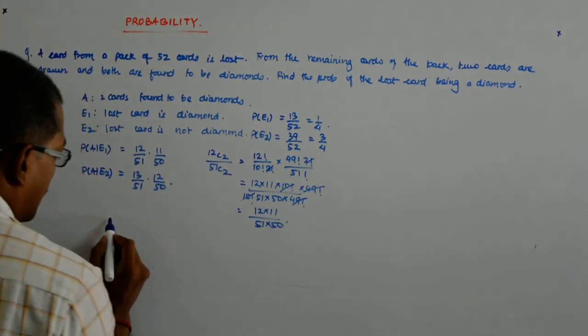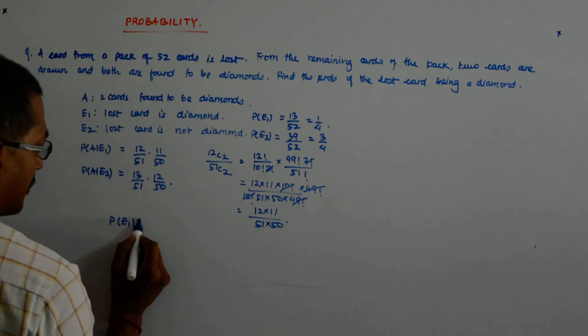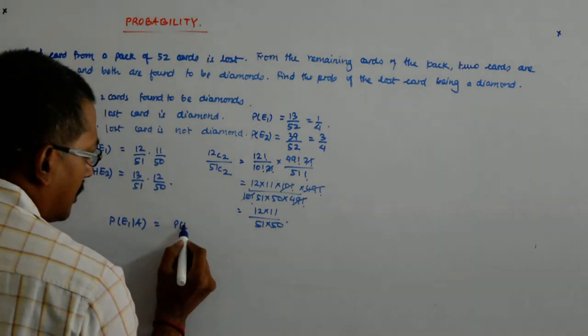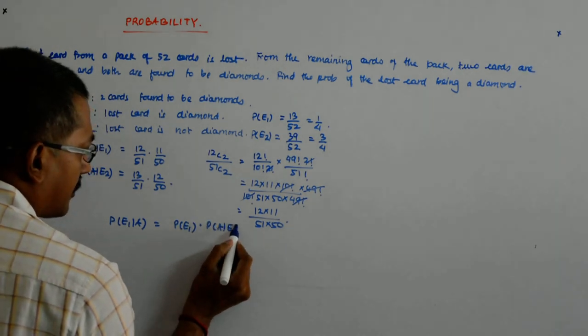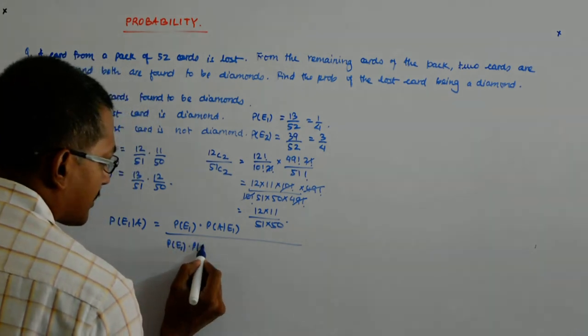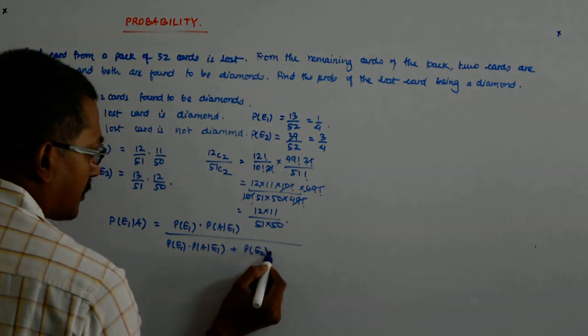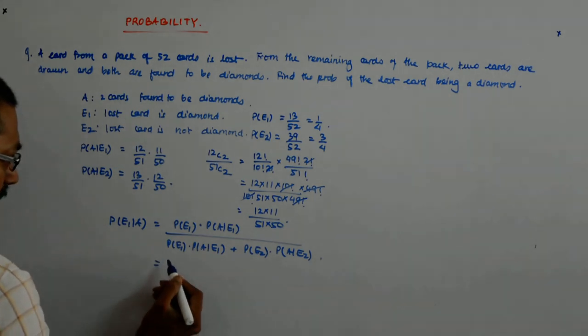Just plug it into Bayes' theorem. It says the probability that a diamond is lost given that the two cards drawn are diamonds equals P(E1) into P(A|E1) upon P(E1) into P(A|E1) plus P(E2) into P(A|E2). Now, what is that?